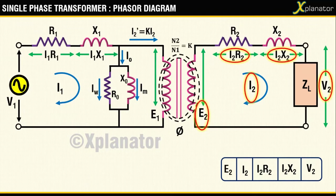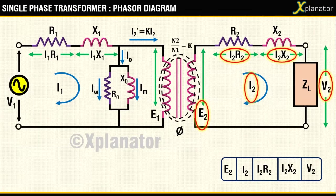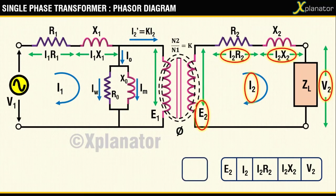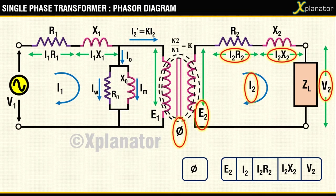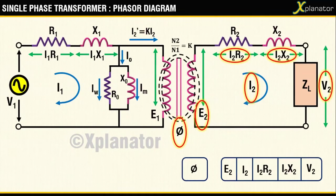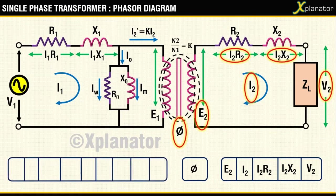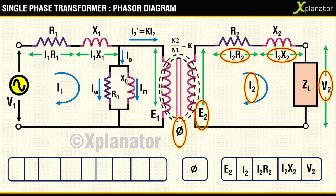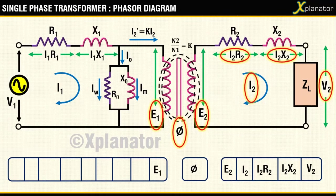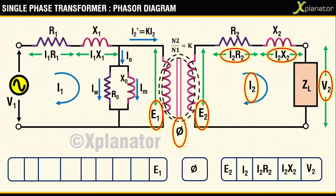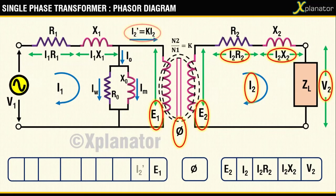Then there is this flux Phi in the core which links both the primary as well as the secondary circuit. Coming to the primary side, you have a total of nine terms. Starting from the end, there is E1, the induced EMF in the primary winding; I2 dash, the primary current to neutralize the demagnetizing effects of I2; IM, the magnetizing current; IW, the working current; I0, the no-load current.